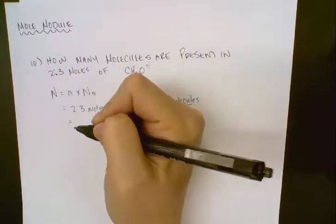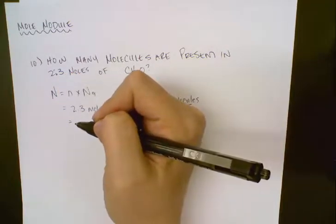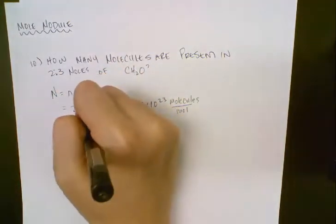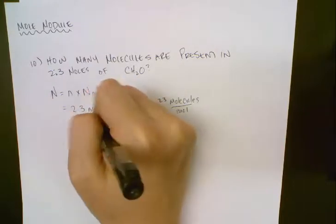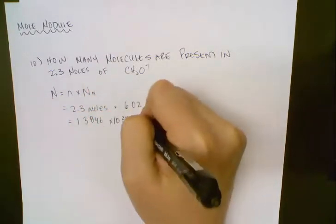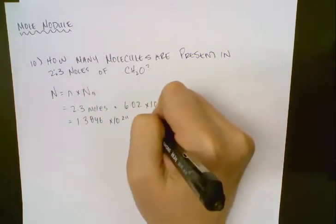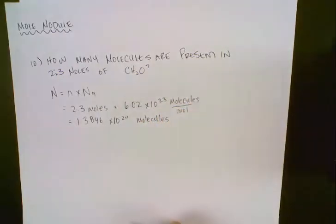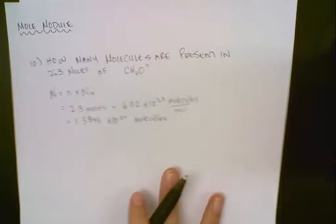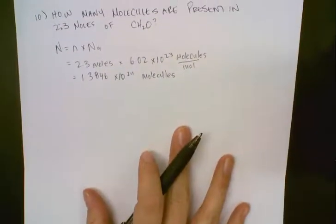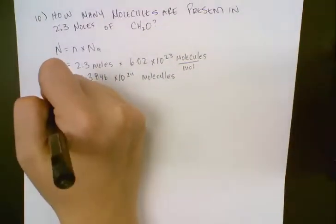So our units are going to be molecules per mole. If we put that into our calculator, what we're going to get is 1.3846 times 10 to the 24 molecules. That's one of our more simple questions, but we're going to use this number to help us in question 11.